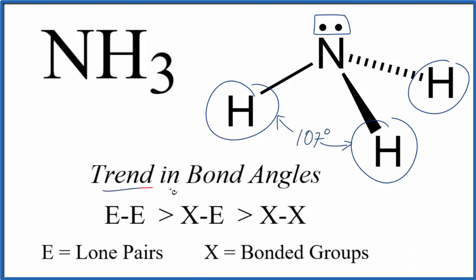It's helpful to look at this trend here for bond angles. The E is the lone pair, X is the bonded group, or the atoms. Two lone pairs are going to push more than an atom and a lone pair. But the atom, this hydrogen and the lone pair, that'll push more than just two atoms, two hydrogen atoms. So the lone pair, again, it's pushing down. We get this trigonal pyramidal molecular geometry.